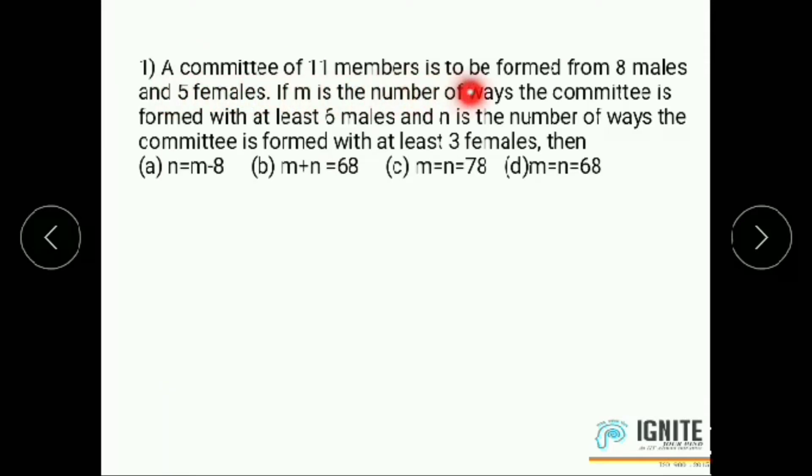First question, a committee of 11 members is to be formed from 8 males and 5 females. If M is the number of ways the committee is formed with at least 6 males and N is the number of ways the committee is formed with at least 3 females. From this question, M is the number of ways the committee is formed with at least 6 males. At least 6 males means greater than or equal to 6. Maximum number 8, 8 males. So greater than or equal to 6: 6, 7 or 8. Next, N is the number of ways the committee is formed with at least 3 females. At least 3 means greater than or equal to 3. Maximum 5 females, so 3, 4, 5. So possible combinations are, total we have to select 11 members. A committee of 11 members is to be formed. So possible combinations are 6 males then 5 females, 7, 4 and 8, 3.